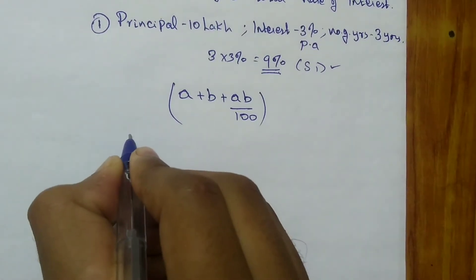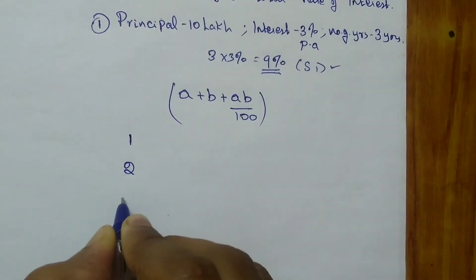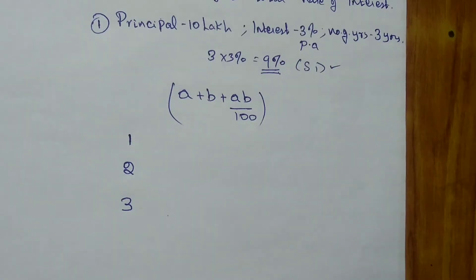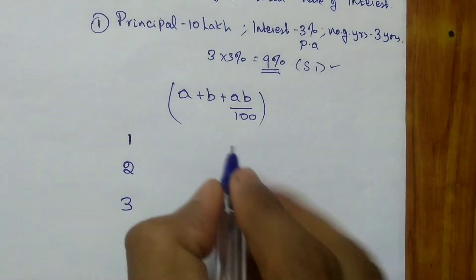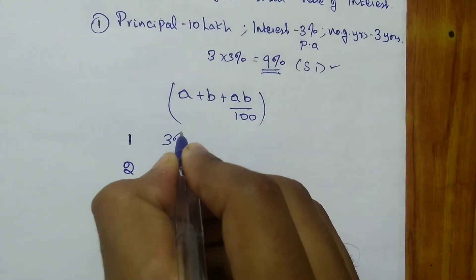Now let me show you how this trick will work with the given numbers. So here the total number of years is 1, 2, and 3. So in first year, it is sufficient for you to pay only 3%. So you have to pay only 3%.